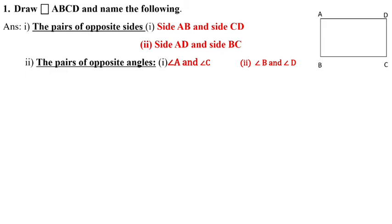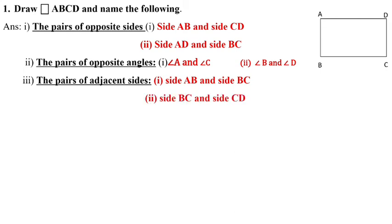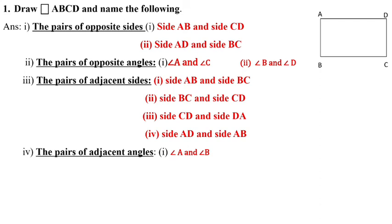The pair of adjacent sides: adjacent sides form L. Side AB and side BC, side BC and side CD, side CD and side AD, side AD and side AB. There are four adjacent sides in a quadrilateral.